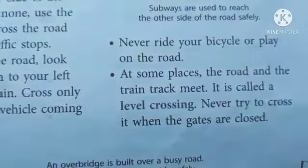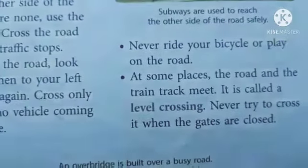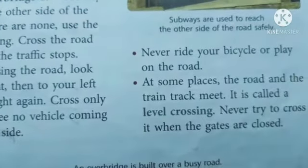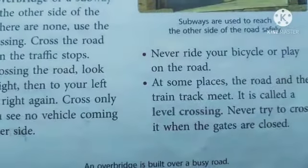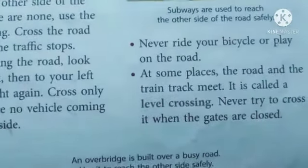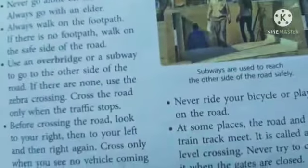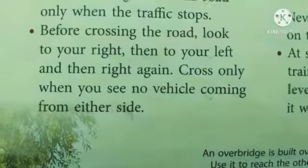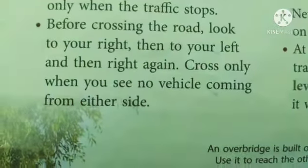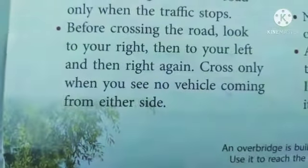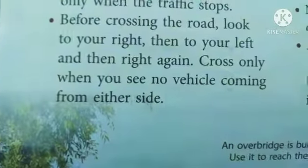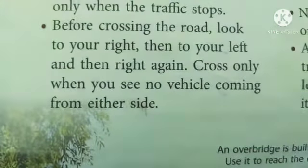In some places the road and the train track meet — this is called a level crossing. You may have seen this while travelling, where all vehicles wait until the train crosses the railway track. Never try to cross when the level crossing gates are closed. So this is all about road safety — certain rules we must follow when using the road.